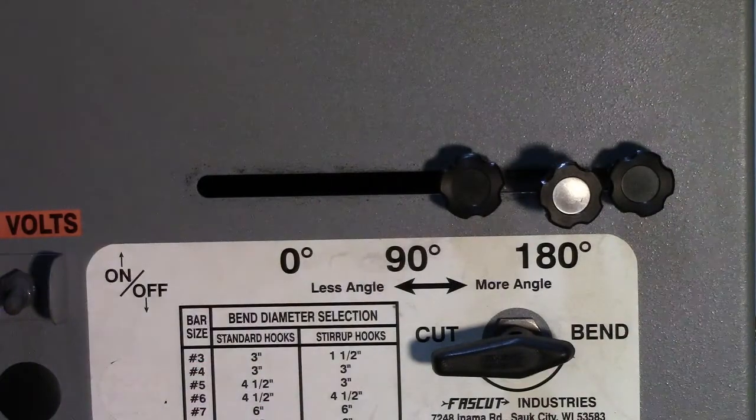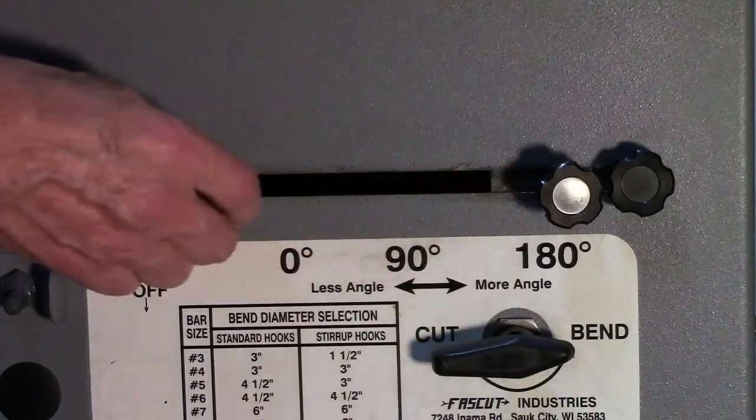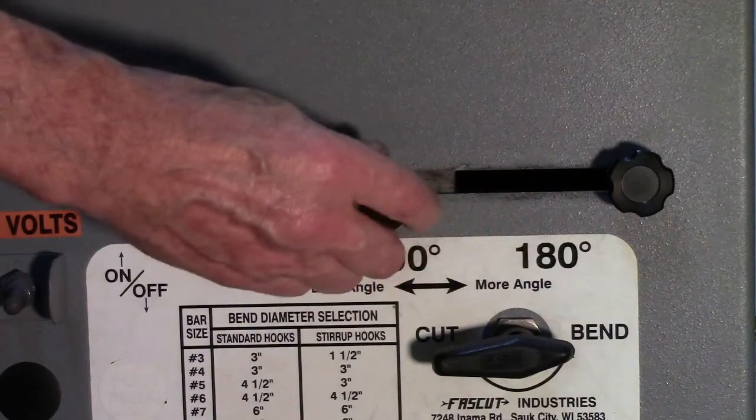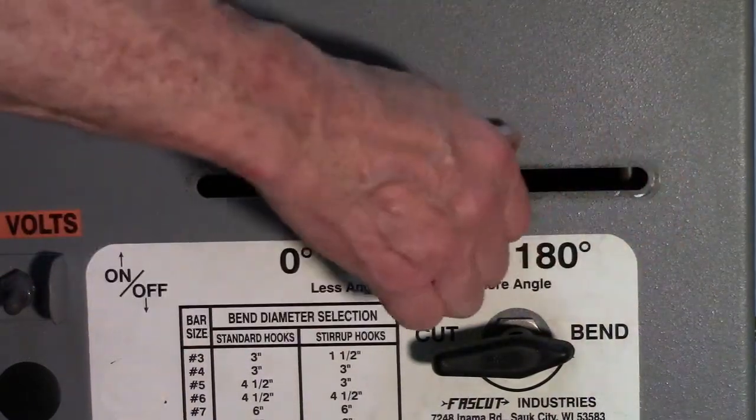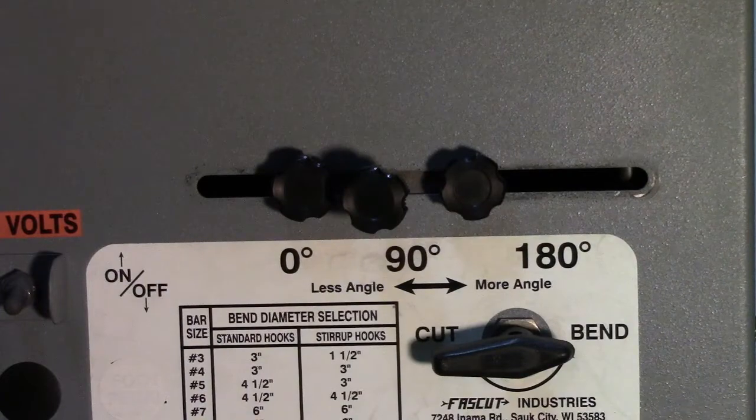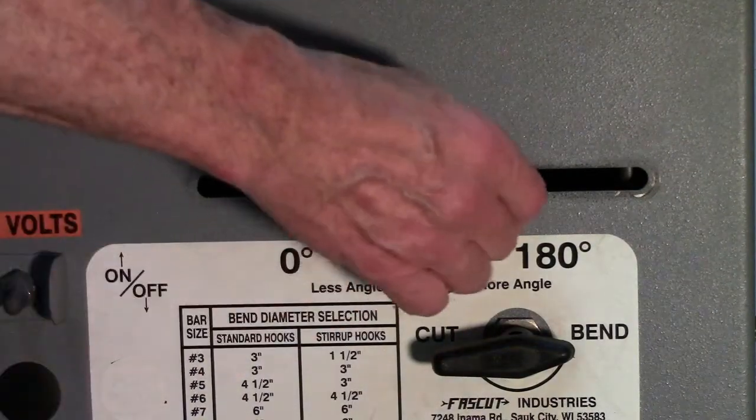Unplug the controller at any time to use the bend angle adjustment lever on the side of the machine to control the bend angle. When you plug the controller back in, just remember to move the angle adjustment lever all the way back over to the right and lock it in place.